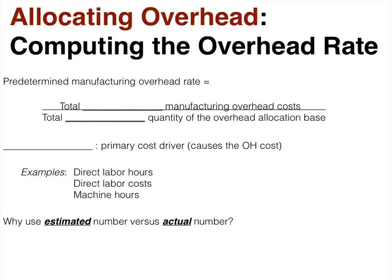The first thing we need to do is calculate a rate — the technical term is our predetermined manufacturing overhead rate. This is step one in the process of calculating allocated overhead. To calculate the rate, we take the total estimated overhead cost and divide that by the total estimated quantity of the allocation base.